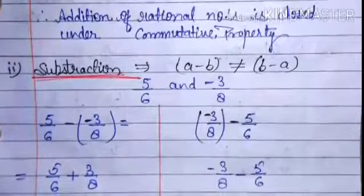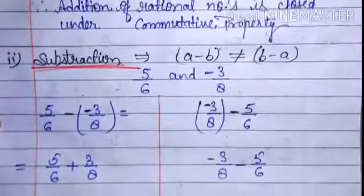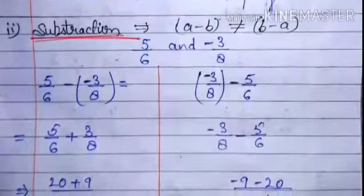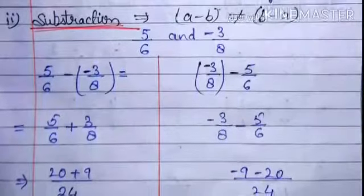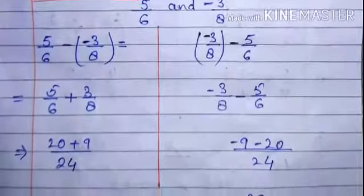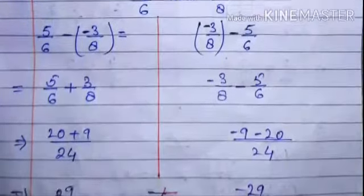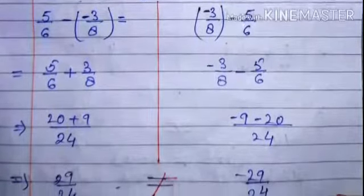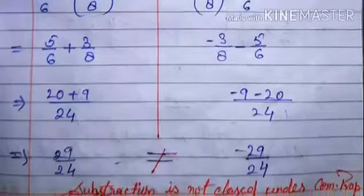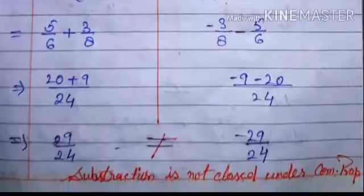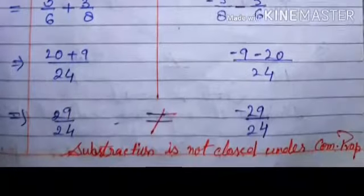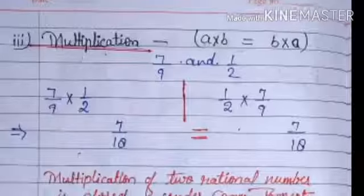Next we will check commutative property for subtraction — whether a minus b equals b minus a. Taking two rational numbers five upon six and minus three upon eight, we check a minus b on one side and b minus a on the other side. After solving, we get 29 upon 24 on one side and minus 29 upon 24 on the other, which are not equal. So we can say subtraction is not closed under commutative property.